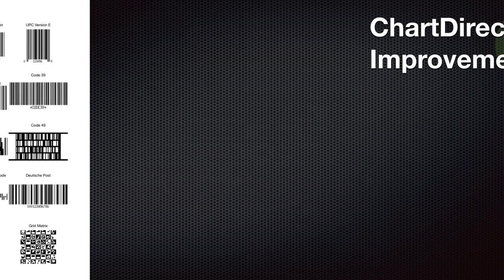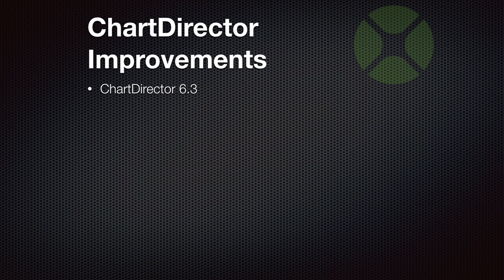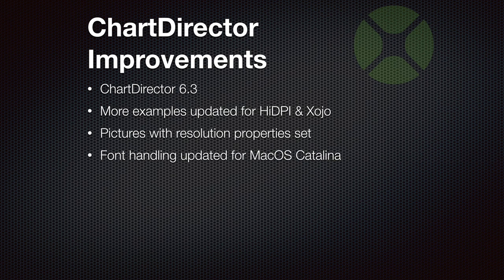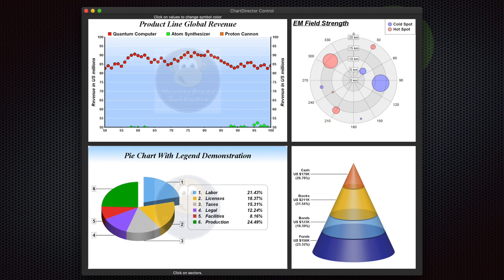ChartDirector got improved last year with a new release of the ChartDirector library. We have more examples updated for higher resolutions and newer Xojo versions. Our pictures are now returned with a resolution property set so they show at the correct resolution if you assign them to the backdrop of a window. We got an update to fix font handling for macOS Catalina, a few functions to help you work on dark mode, and you can use a lot of options to customize charts with gradients, pictures for your items, or custom fonts.